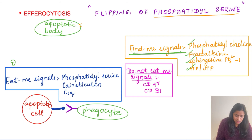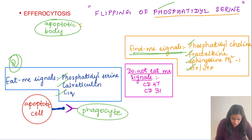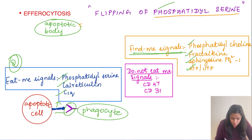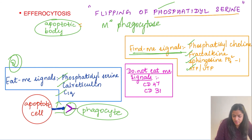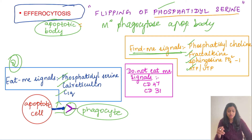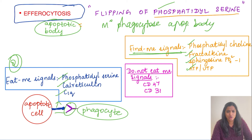Once macrophages are attracted to the site by find-me signals, eat-me signals then guide engulfment. The eat-me signals include phosphatidylserine, calreticulin, and C1q present on the apoptotic cell. The phagocyte expresses receptors for these signals and, upon binding, phagocytoses the apoptotic body. This phagocytosis of the apoptotic body by macrophages is given the special name efferocytosis.